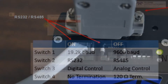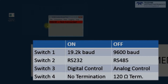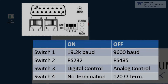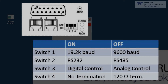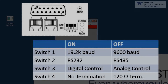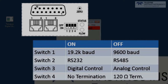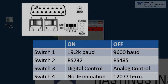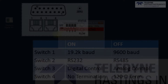Next, we verify the baud rate. The baud rate, either 9600 or 19.2k, is set by switch number 1. One other thing to verify while we're looking at the switch is, if we want to use the software to control the flow controller, then we need to have switch number 3 set for digital command. In other words, the flow controller is going to get the setpoint command through the digital port, not via an analog command signal.